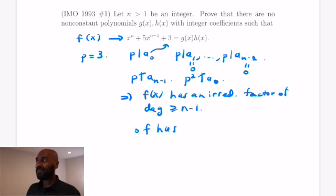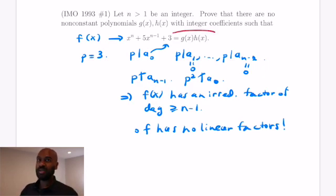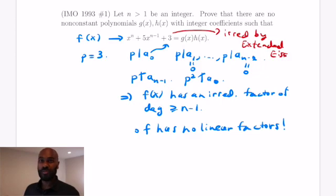But f doesn't have any linear factors. You can actually check if it had a linear factor, it would have a root. And the only possible integer roots it could have are plus or minus 1 or plus or minus 3, if it factored. And you can test that all of those don't work. Okay, so then we conclude this polynomial actually has to be irreducible by the extended Eisenstein's criterion. A cool, nice short proof for this IMO problem.